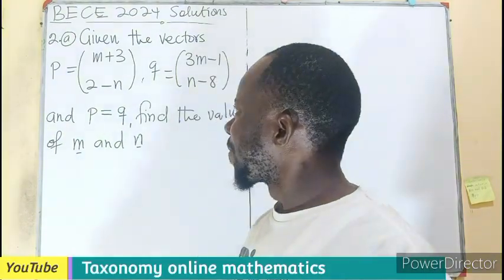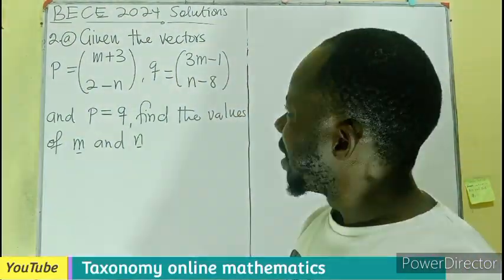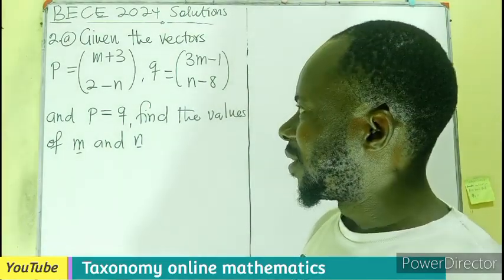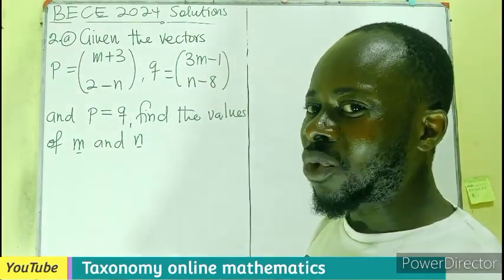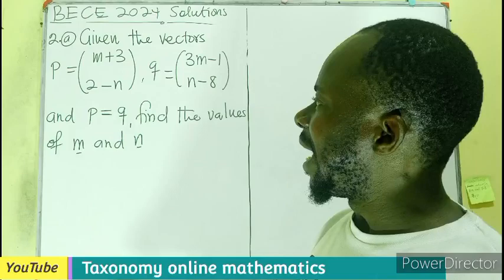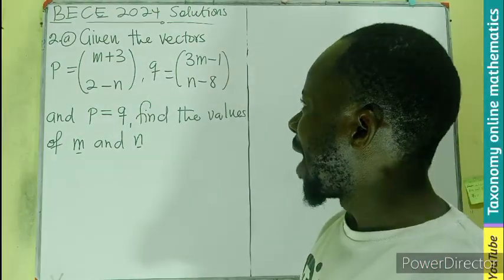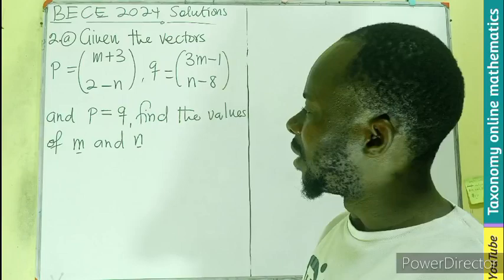Hello, welcome. Question 2A, given the vectors P equals M plus 3 in the x-coordinate, 2 minus N in the y-coordinate, and Q also given to 3M minus 1 for the x-coordinate,